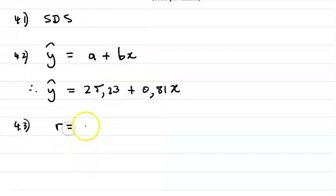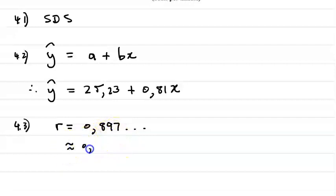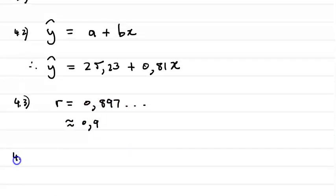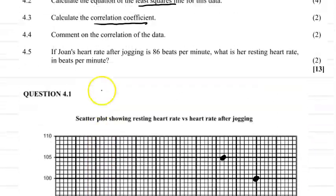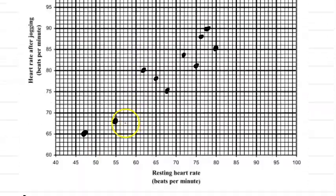So r is equal to 0.897. So as you can see this is a very strong positive relationship. So if we round it off it's going to be approximately 0.9. 4.4 and here they ask us to comment on the correlation of the data.